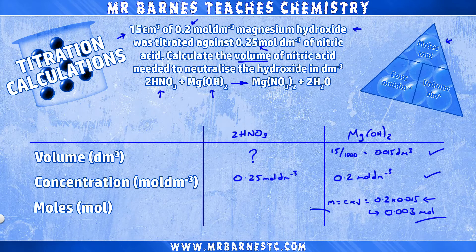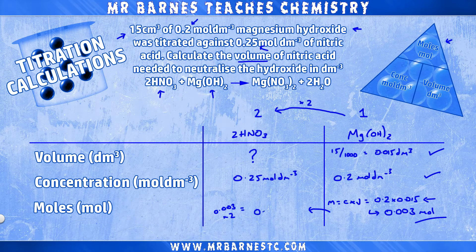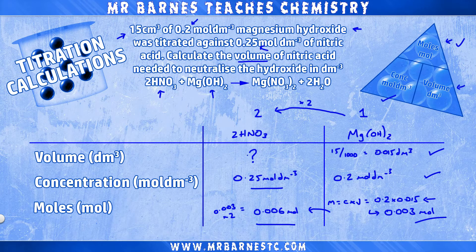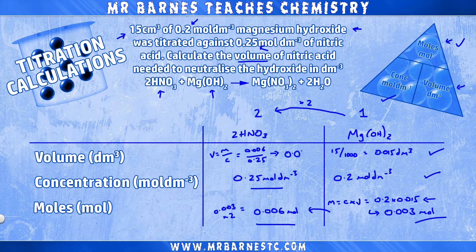We now need to work out the moles of nitric acid. We have a ratio of 1 to 2, so I take 0.003 and multiply by 2, giving me 0.006 moles of nitric acid. We now have the moles and the concentration of nitric acid, so from the triangle we can work out the volume: moles divided by concentration — 0.006 divided by 0.25 — which gives 0.024 decimetres cubed as the final answer.